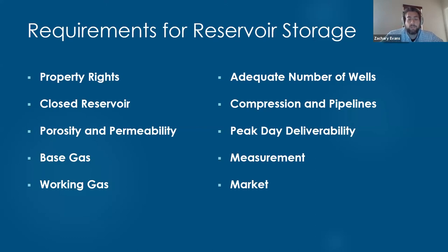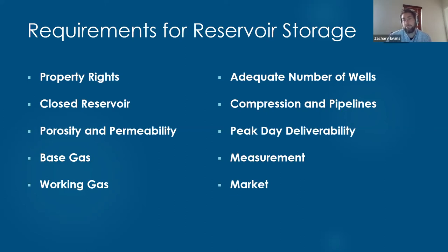You need a closed reservoir — if you don't have integrity of your reservoir, if you have potential spill points and migratory pathways, you're not going to have a successful operation. You need both porosity and permeability, but remember that what makes for effective production porosity and permeability may not match a storage environment — storage requires much higher rates of delivery than traditional production wells, because we're charging these facilities up to high pressure every year. You're going to need both base gas and working gas. The base gas provides the pressure needed to cycle the working gas in and out each season, especially without a water drive to lean on.